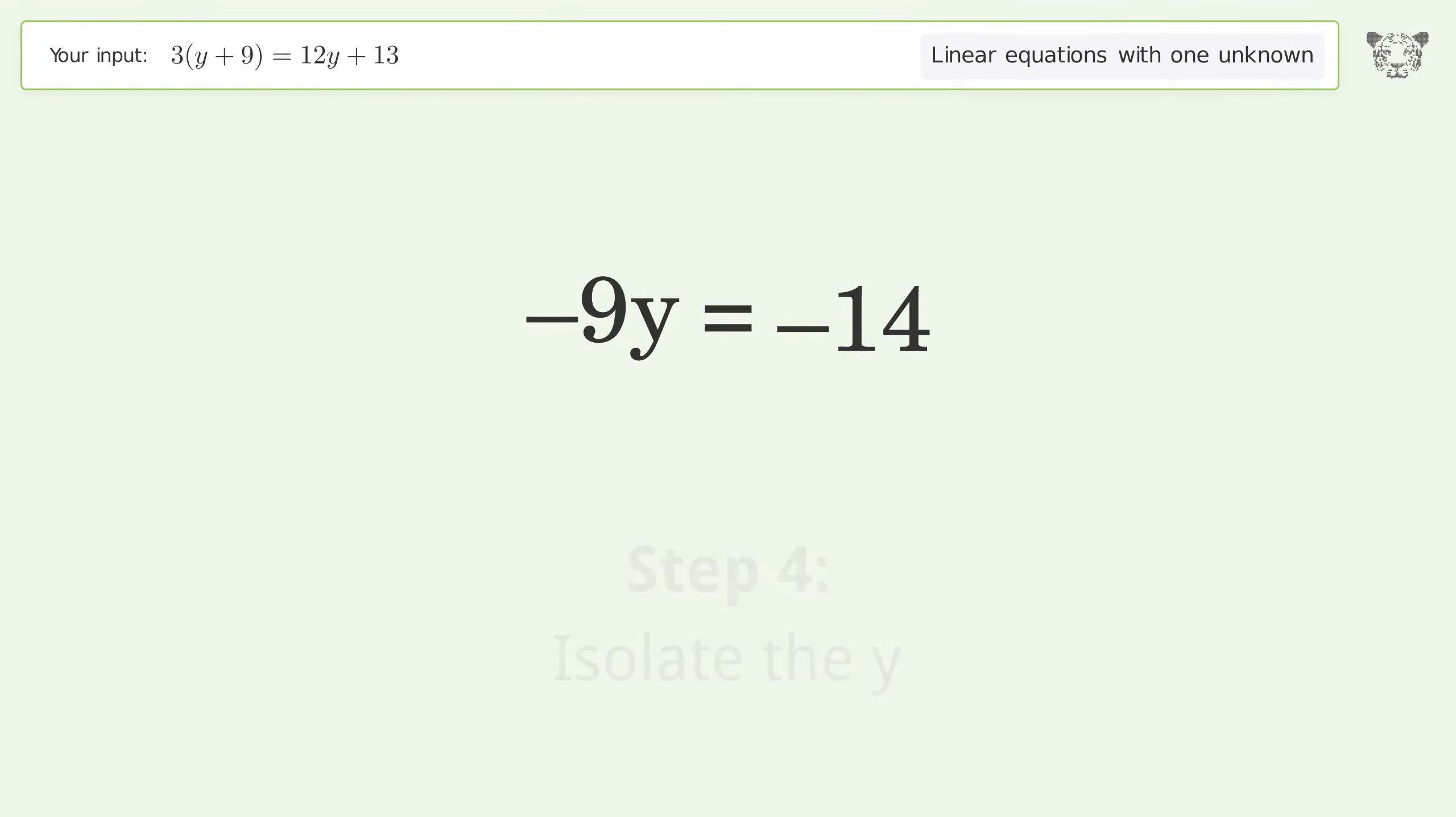Isolate the y. Divide both sides by negative 9. Cancel out the negatives. Simplify the fraction. Cancel out the negatives. And so the final result is y equals 14 over 9.